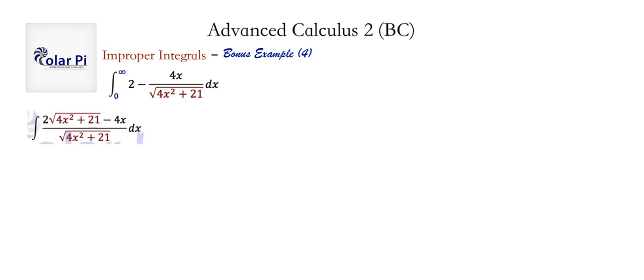All I do in this first step is just get common denominators for this two and this quotient here. And that'd be this. And then next, what I'm going to do is factor out a negative two from the numerator. You'll see why this is helpful. So if I factor out a negative two from this numerator, then I could write a negative two in front of the integral and then this in the numerator.